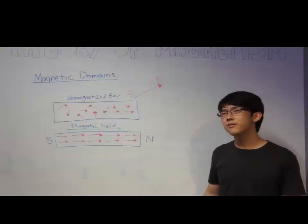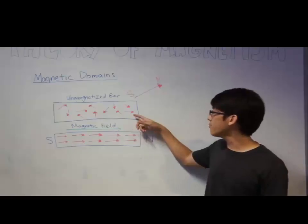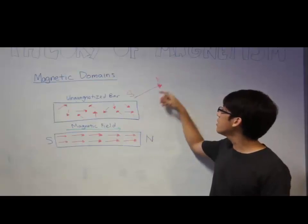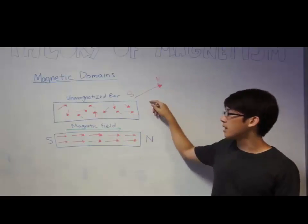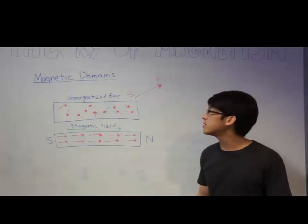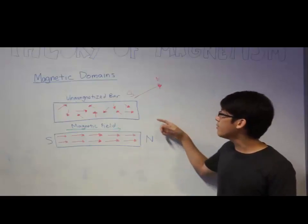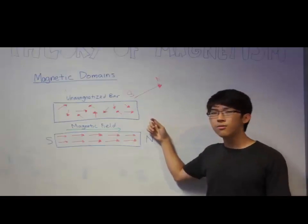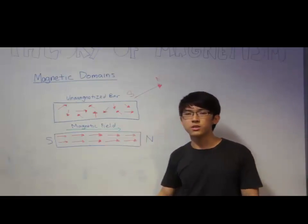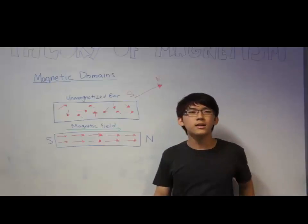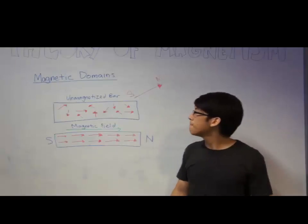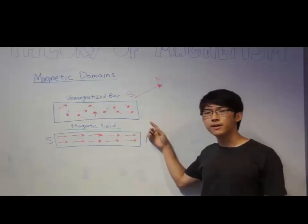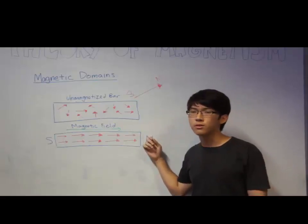In ferromagnetic materials, there are tiny magnets represented by small arrows, where the head is the north and the tail is the south. These are also called magnetic domains. In the unmagnetized bar shown in this diagram, the magnetic domains are aligned in random directions, which cancel out each other, resulting in a negligible magnetic effect. If not all the magnetic effects are canceled out, it will result in a weak magnet.